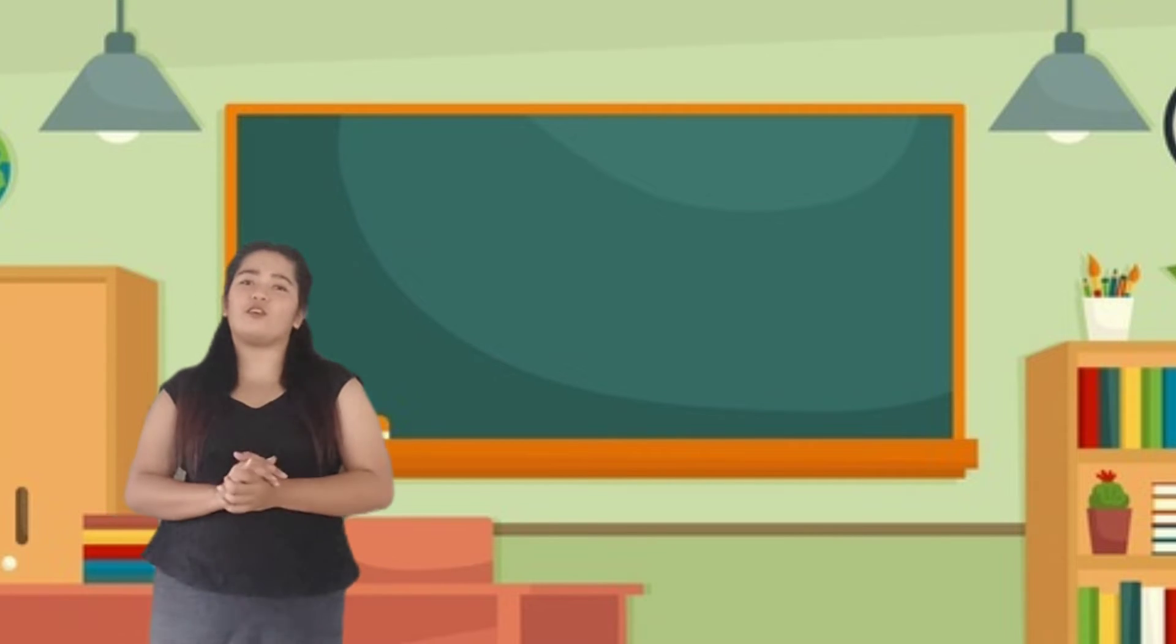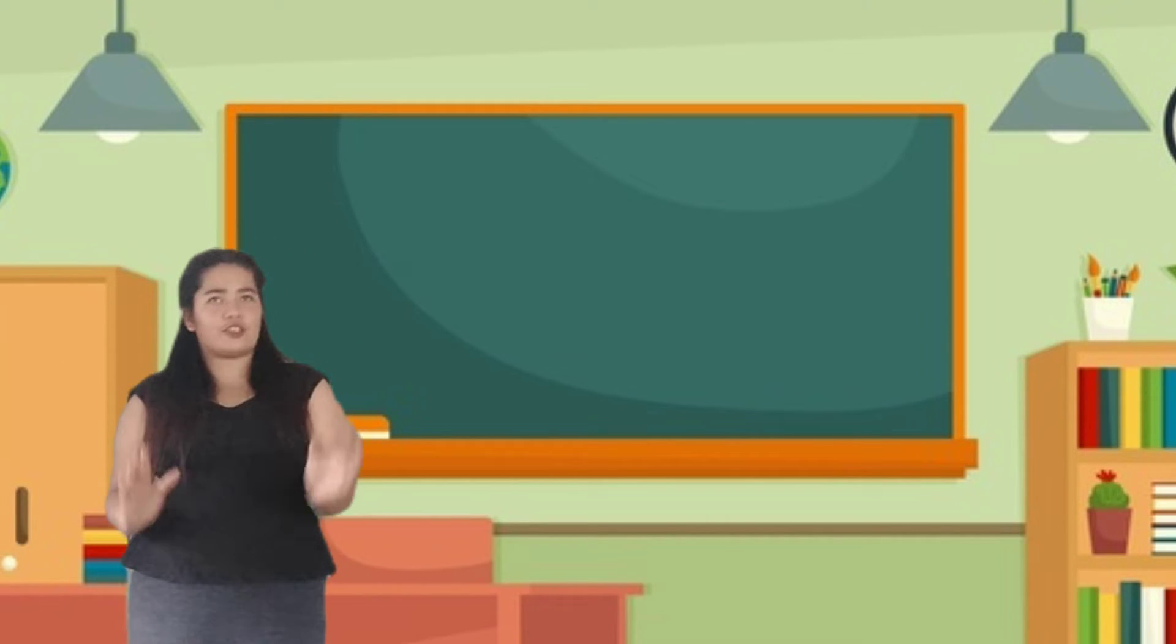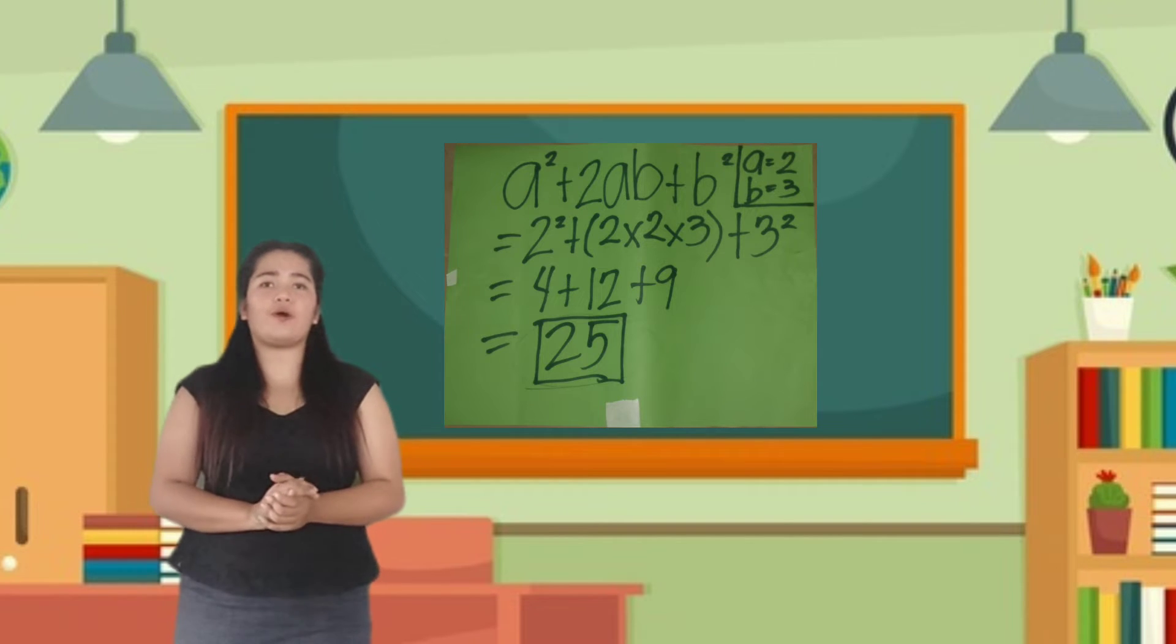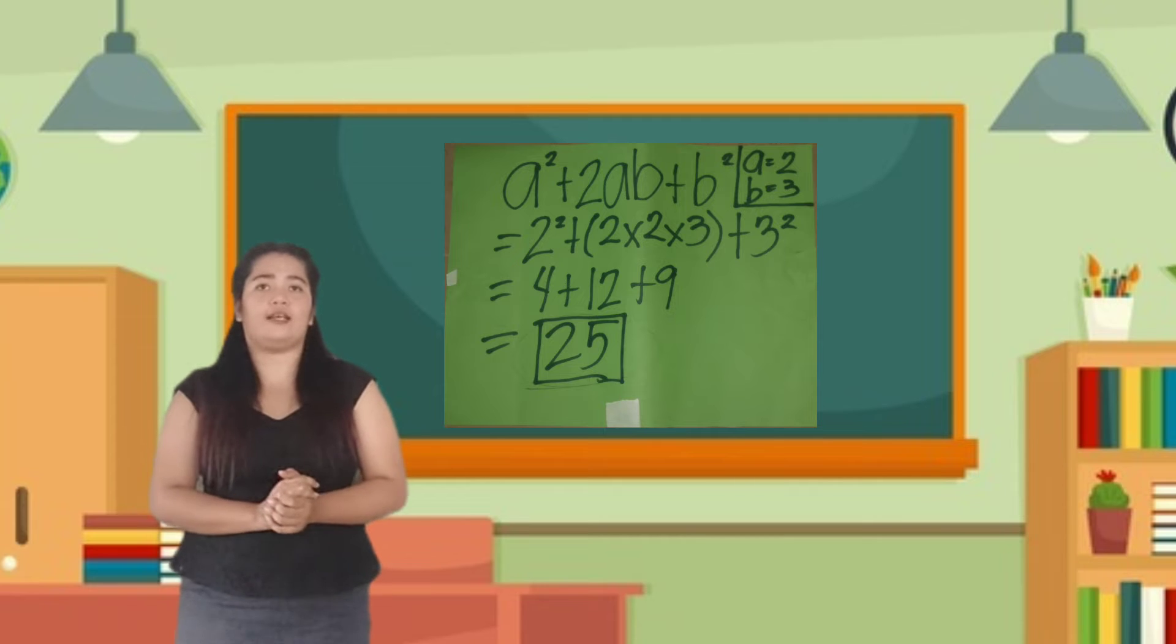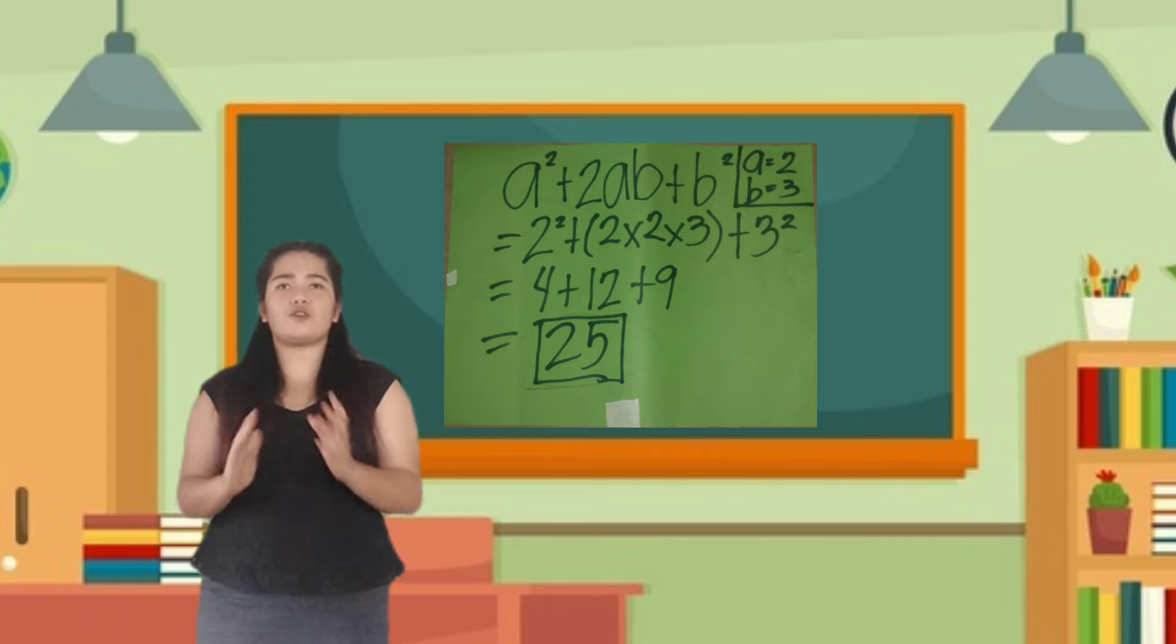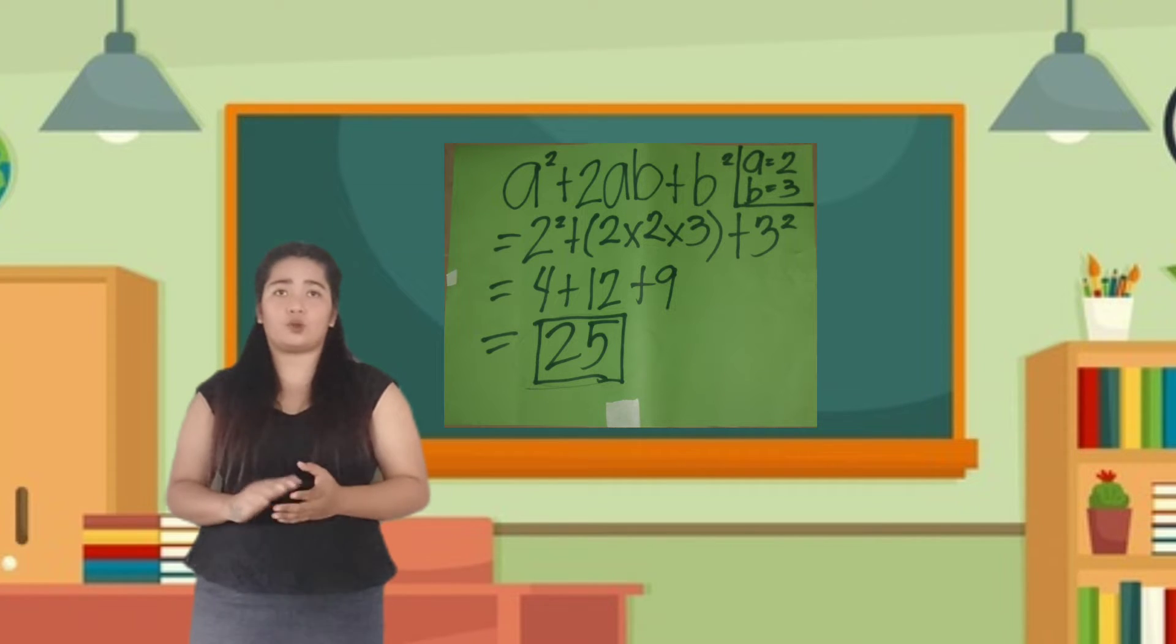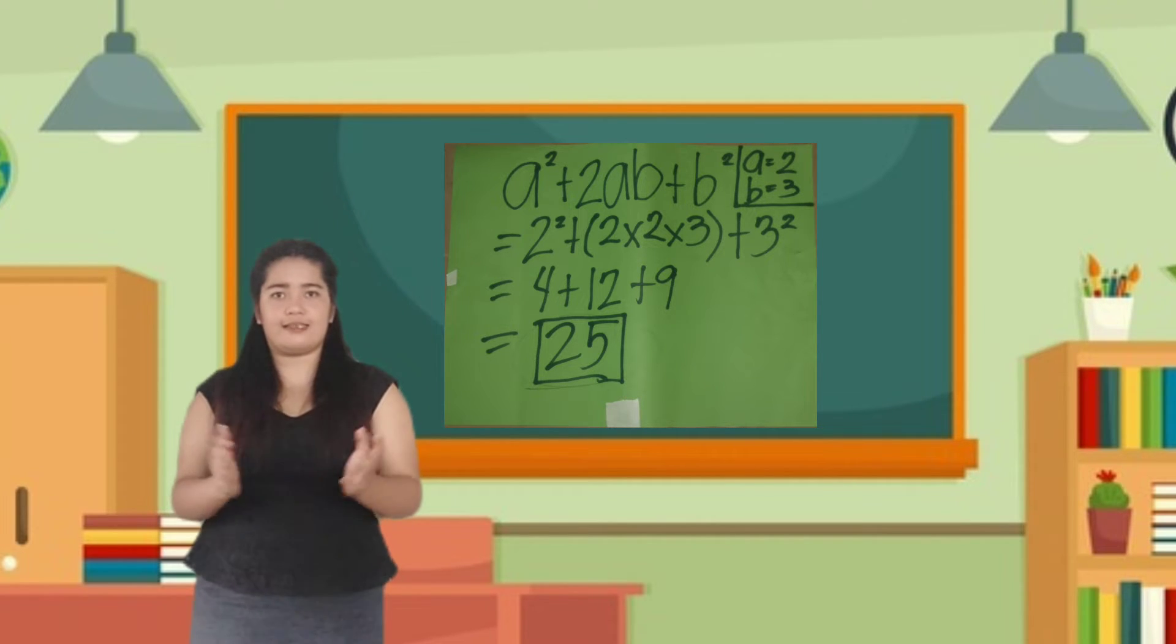Ngayon, in-discuss ko kung bakit ito nga ba ang sagot. Para naman maintindihan ng iba niyong kaklase ang inyong sinagotan. So, number one, A squared plus 2AB plus B squared where A is equal to 2 and B is equal to 3. So, substitute A into 2 and B into 3. So, 2 squared plus 2 times 2 times 3 plus 3 squared. So, start on exponent. 2 squared is equal to 4. 2 times 2 is equal to 4 times 3 is equal to 12. Plus, 3 squared is equal to 9. So, 4 plus 12 plus 9 is equal to 25.